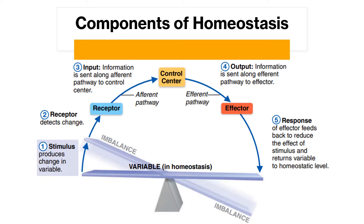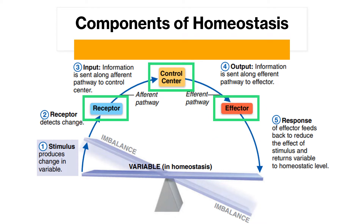Components of homeostasis. There are three main components of the homeostatic control system: receptor, control center, and effector.